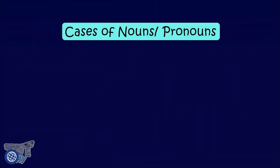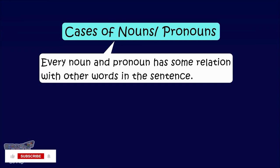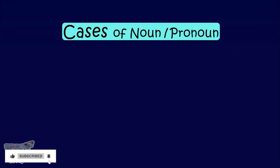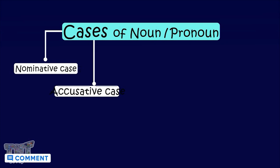Cases of nouns and pronouns — we also learned that every noun has some relation with some other word in the sentence. The relationship between the noun and some other word in the sentence is called case. We have already learned about two cases of nouns and pronouns: the nominative case and the accusative case.